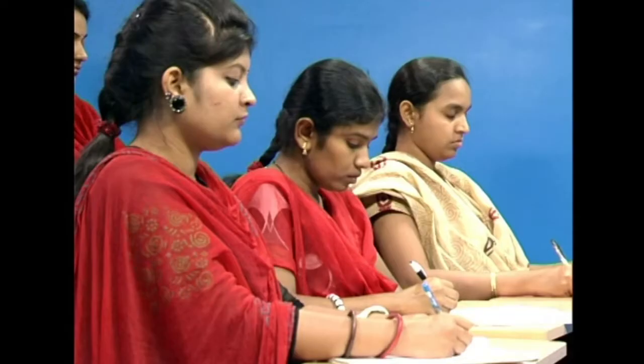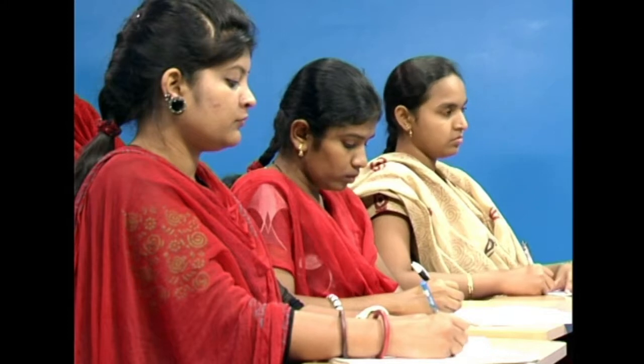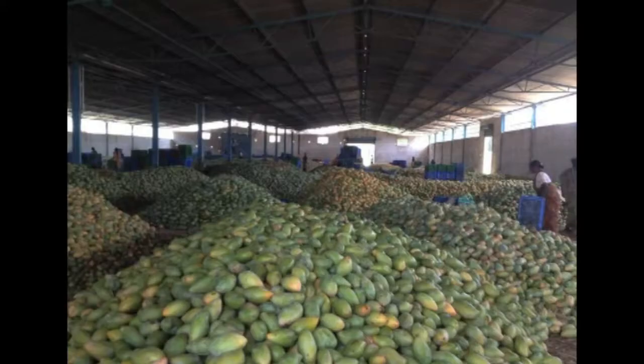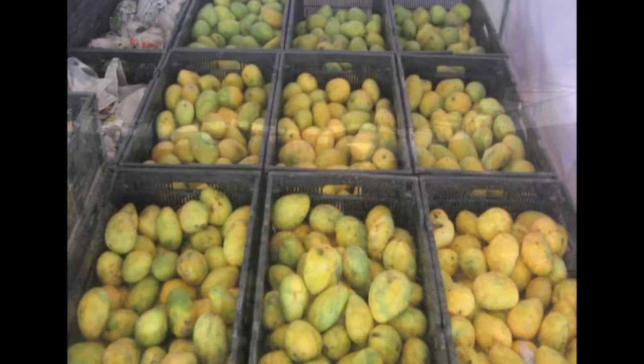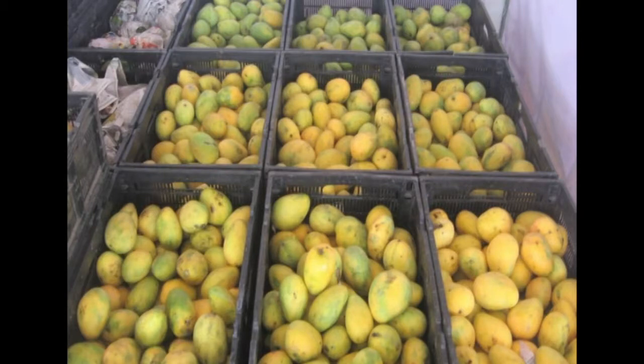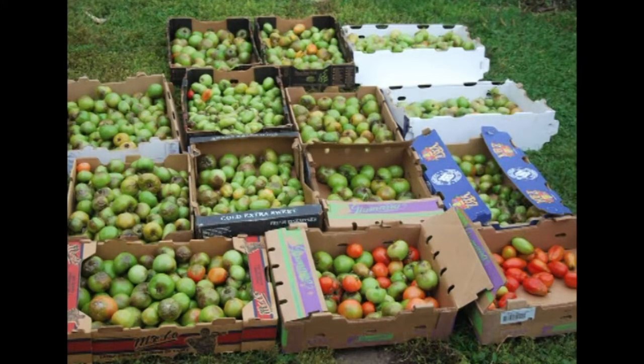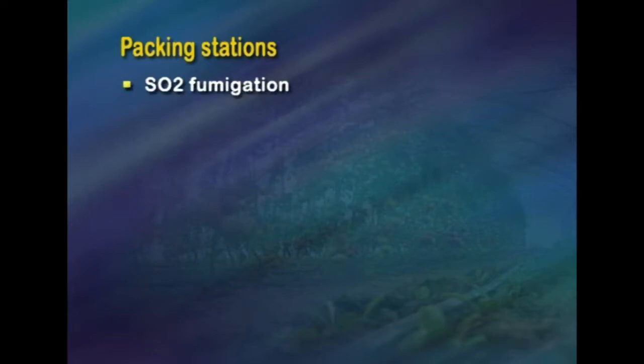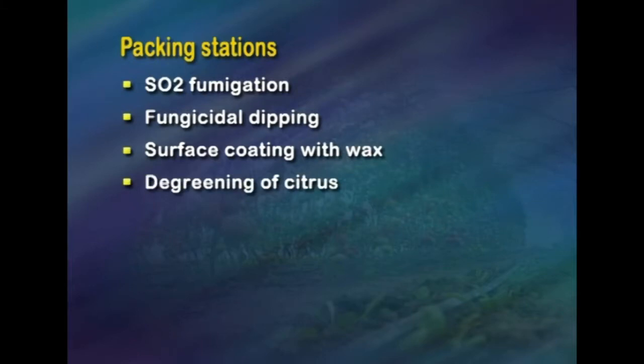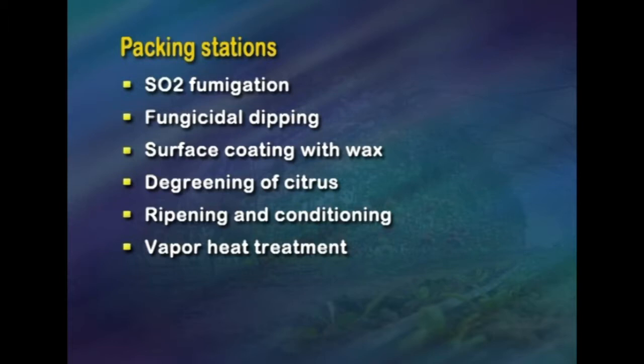Pre-harvest parameters such as selection of proper planting material, crop management, and disease and pest control must be geared toward producing high quality produce. Once the crop is ready for harvest, attention must be paid to harvesting technique; poor harvesting practices can lead to irreparable damage to horticultural produce. It is necessary to standardize maturity indices and harvesting techniques for each fruit and vegetable. At packing stations, there is an absolute lack of packaging house establishments in India; fruits and vegetables are generally packed in the field without any pre-treatment. Important operations at packing stations include sulfur dioxide fumigation, fungicidal dipping, surface coating with wax, degreening of citrus, ripening, conditioning, and vapor heat treatment.